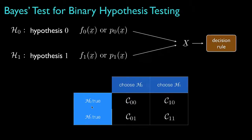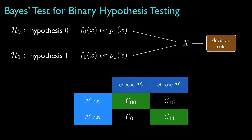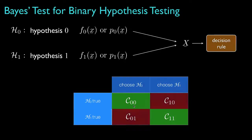Now let's suppose we can assign some costs to each of these situations. C11 would be the cost of a detection, and C10 would be the cost of a false alarm. The costs C11 and C00 correspond to situations where we make the correct decisions, and the costs C01 and C10 correspond to situations where we make the wrong decisions. We'll assume that the cost of making an incorrect decision when H0 is true is greater than the cost of making a correct decision when H0 is true, and likewise the cost for making an incorrect decision when H1 is true is greater than the cost of making a correct decision when H1 is true. These assumptions are reasonable for any situation in which the costs reflect the performance of our decision rule.